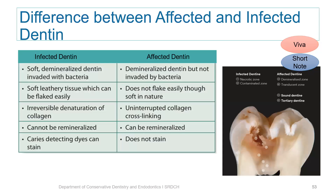An important short note and viva question which can be asked concerns the differences between affected and infected dentin. Infected dentin is the soft demineralized dentin invaded with bacteria, whereas there are no bacteria present in affected dentin though it is demineralized. Infected dentin can be seen as a soft leathery tissue; it can be flaked easily and removed with the help of a sharp spoon excavator. Affected dentin, though soft in nature, does not flake easily and need not be removed.